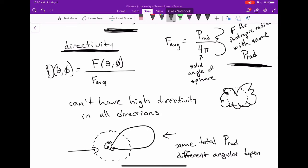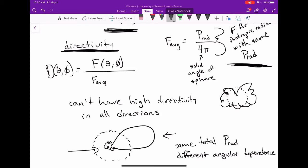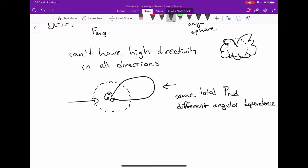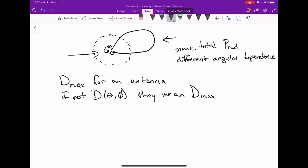It all depends on how you want to spend that total amount of power that you have to radiate. A lot of the time when we're talking about the directivity of an antenna, people will just supply one number. What they're referring to is the max directivity. So if it's not a function of angle, they mean the max value. And that max value, the max value of directivity, has some interesting properties. It doesn't really have an upper limit.